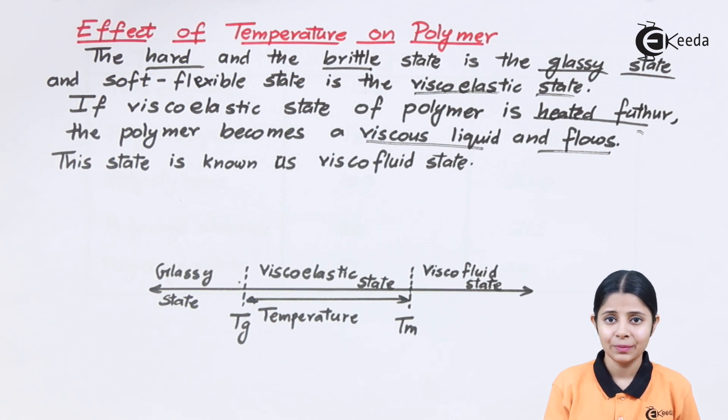The second state is the viscoelastic stage, and third stage is the viscous liquid stage also known as the flow stage. The third state is the liquid state. The first stage is the solid, that is the glassy state. The third state is liquid.